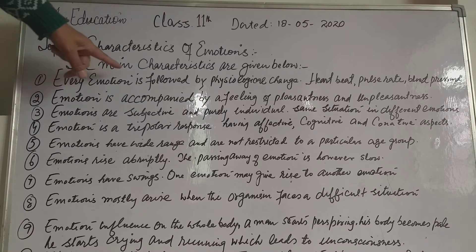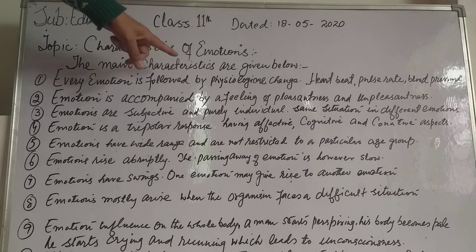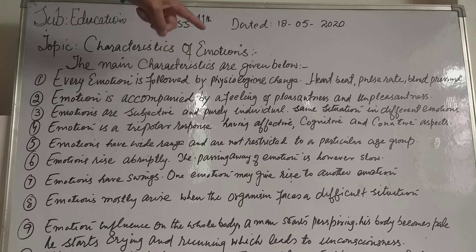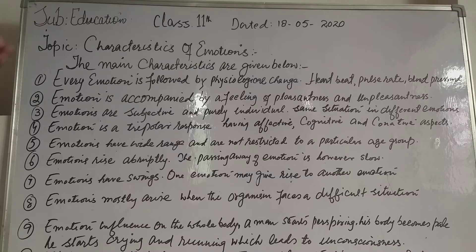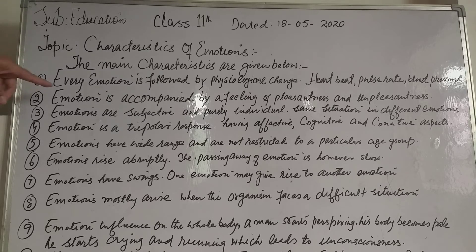Number one: every emotion is followed by a physiological change, such as rapid heartbeat, change in the pulse rate, change in blood pressure, change in facial expression, voice, and body movement.